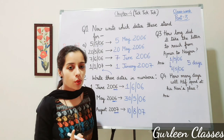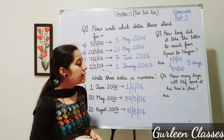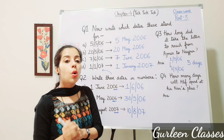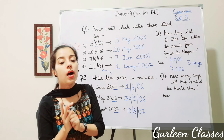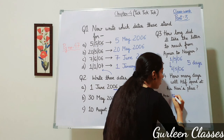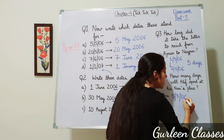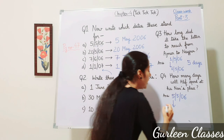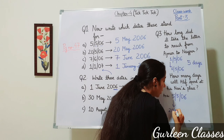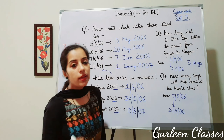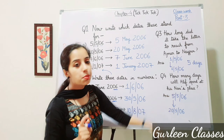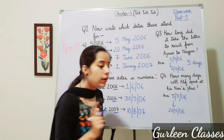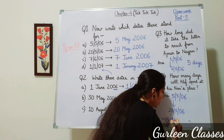Question 4: How many days will Atif spend at his nani's place? Atif went to his nani's home on 5th May 2006 and came back on 20th May 2006. So 20 minus 5 equals 15 days.